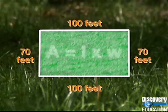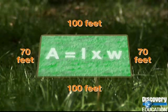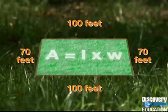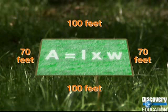Area is the size of the flat region enclosed by the figure. In this case, it's the amount of land enclosed by the fence. It's measured in square units. We can use square feet — one square foot is the size of a square one foot on a side.